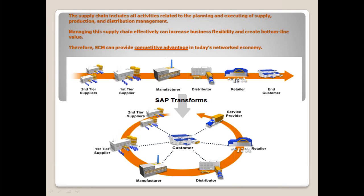The end user gets demand from the retailer, who gets it from the distributor, who gets it from the manufacturer, who gets it from the supplier. So this is the demand flow and this is the supply flow. Demand is reverse, supply flows from that direction.